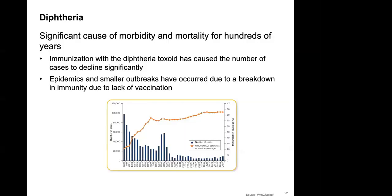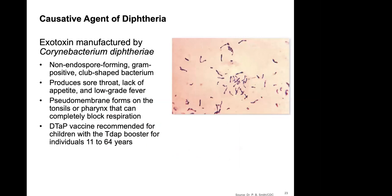Diphtheria has caused significant morbidity and mortality for hundreds of years. We do have immunizations against it now, which has caused cases to decline significantly. Epidemics and outbreaks have occurred due to breakdown of immunity from lack of vaccination. The vaccine is the DTaP vaccine, which covers diphtheria, tetanus, and pertussis.